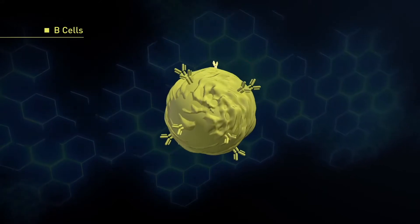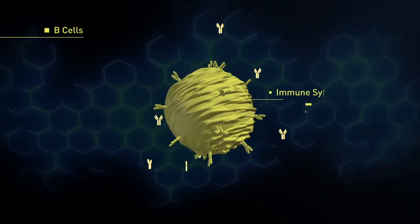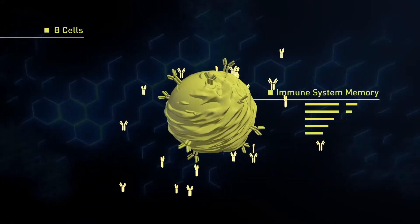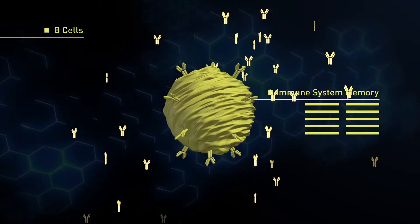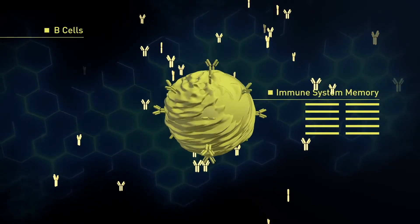B-cells. B-cells mature in the bone marrow, which is the tissue inside the bones. When activated, they assist in antibody production and immune system memory.